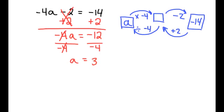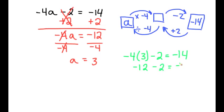We are claiming that our solution is three. To check, we follow regular order of operations: negative four times three — putting three in parentheses — minus two equals negative fourteen. Negative four times three is negative twelve, minus two equals negative fourteen. We can change that to negative twelve plus negative two equals negative fourteen, which is the same as the negative fourteen on the right. Once again, we have been successful.